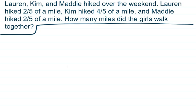This time we have a word problem. Let's read it carefully. Lauren, Kim, and Maddie hiked over the weekend. Lauren hiked two-fifths of a mile. Kim hiked four-fifths of a mile. And Maddie hiked two-fifths of a mile. How many miles did the girls walk together? All right, so it's a word problem, so I'm trying to decide if I'm adding or subtracting. I did see a key word here that says together, and I think that when I hear the word together, I'm looking for a total, which tells me I'm going to be adding.